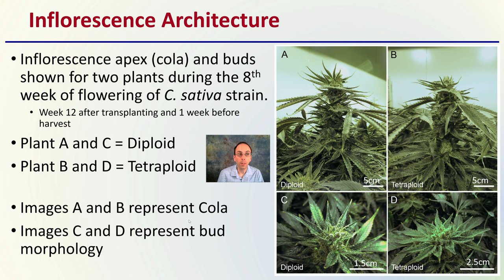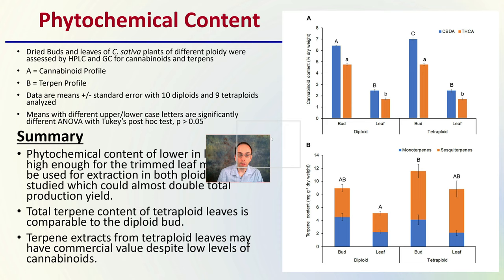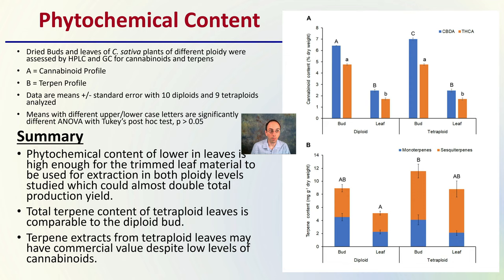Looking more at the data now: phytochemical content of dried buds and leaves of cannabis sativa plants of different ploidy levels was assessed using HPLC and GC — high pressure liquid chromatography and gas chromatography — for cannabinoids and terpenes. Graph A is the cannabinoid profile and B is the terpene profile. Data are means plus or minus standard error where 10 diploids and 9 tetraploids were analyzed. Means with different upper and lowercase letters are significantly different using ANOVA with Tukey's post hoc test at a p-value of 0.05.